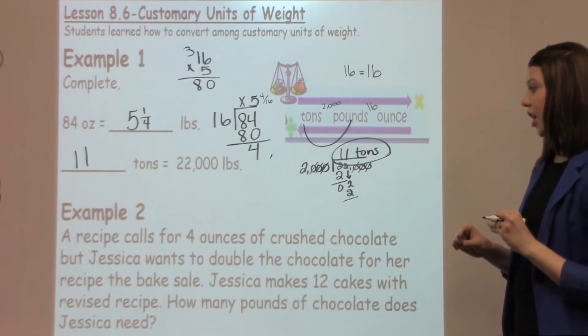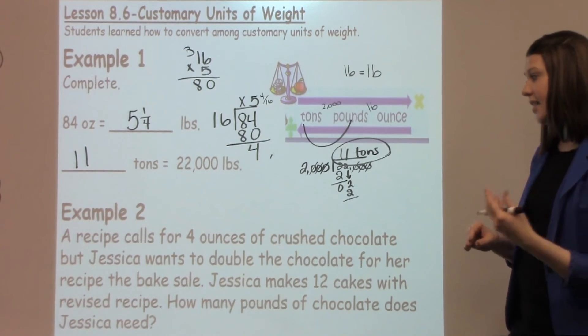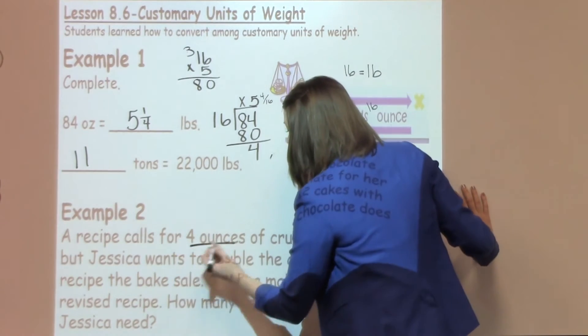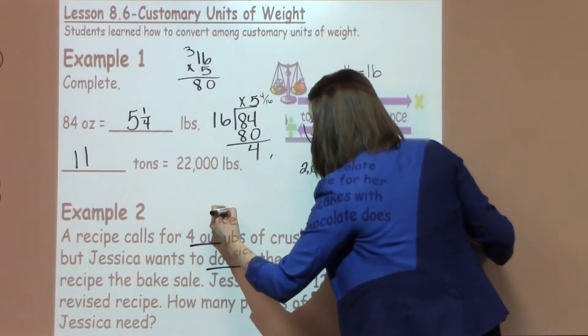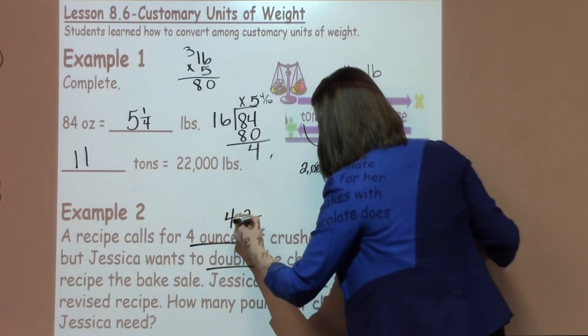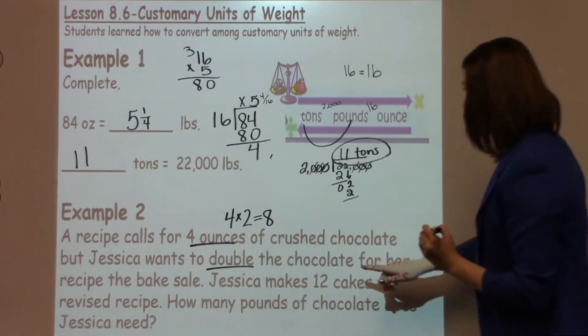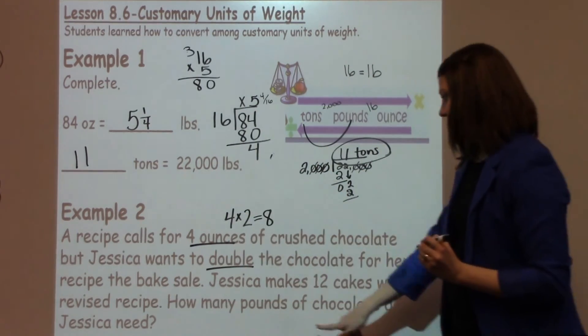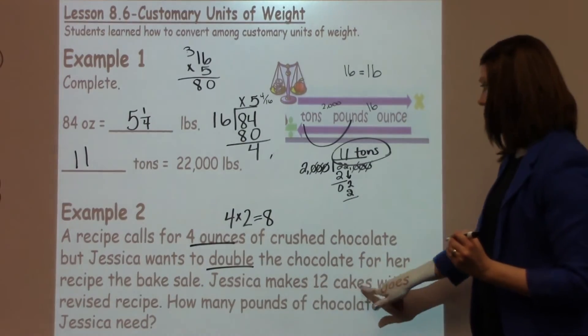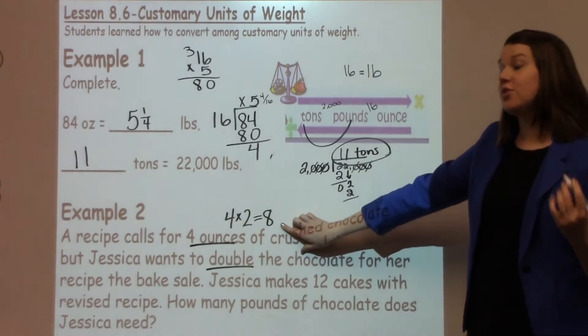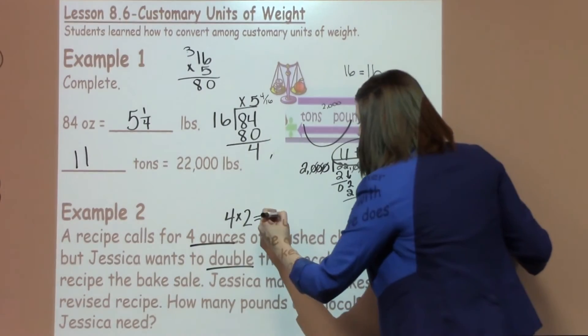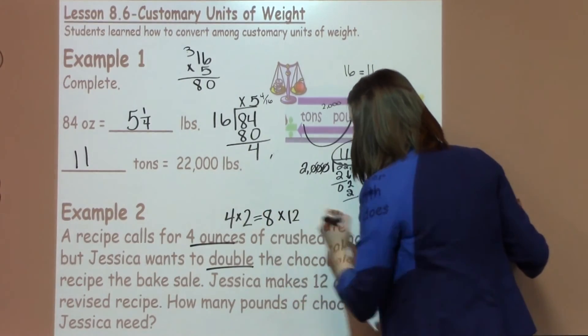It says there are 4 ounces of crushed chocolate, but she wants to double that. So I know 4 ounces, and to double that, that's like taking it times 2. So I'm going to take 4 times 2, gives me 8. Now, the next sentence says that Jessica makes 12 chocolate cakes with the revised recipe. So I know each cake is going to need 8, but she makes 12 cakes. So I'm going to take 12 times 8.